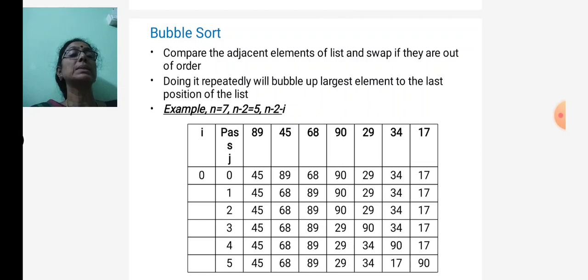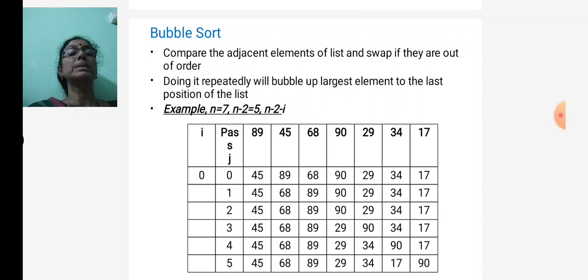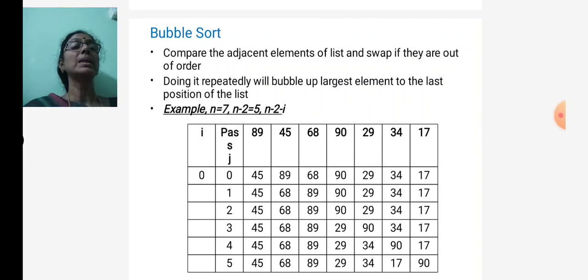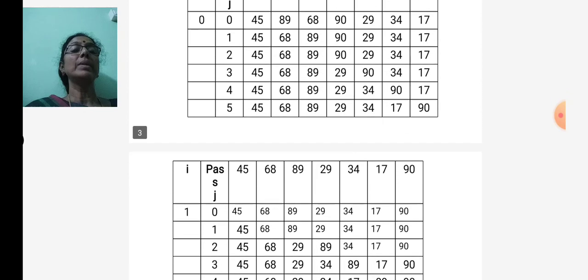Consider the example array: 89, 45, 68, 90, 29, 34, and 17. In the first pass, we have 6 j-iterations. First, 89 and 45 are compared and swapped. Then 89 and 68 are compared — since 89 is greater, we swap. At the end of the first pass, the largest element 90 moves to the last position of the array.